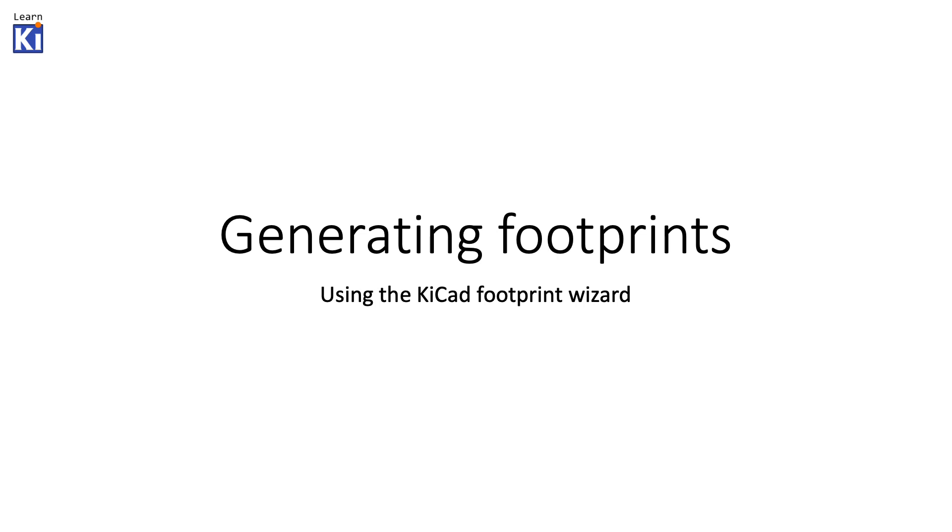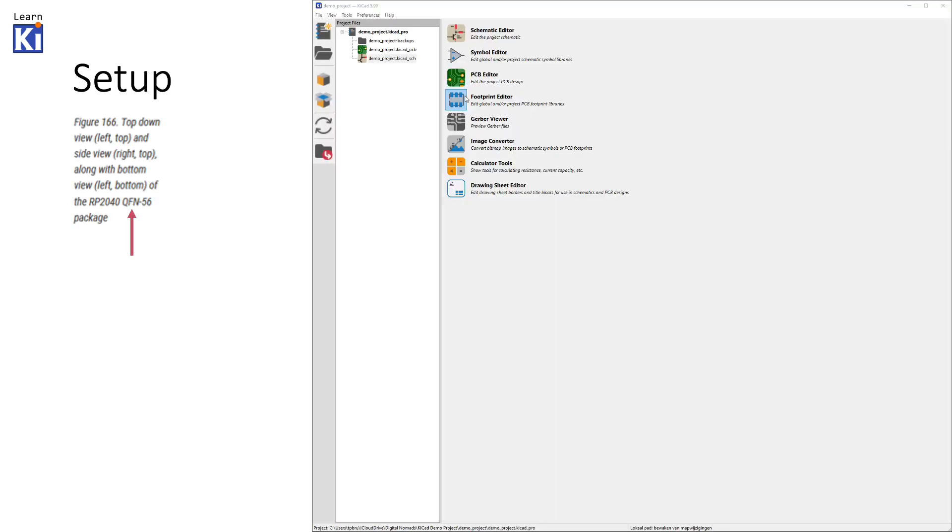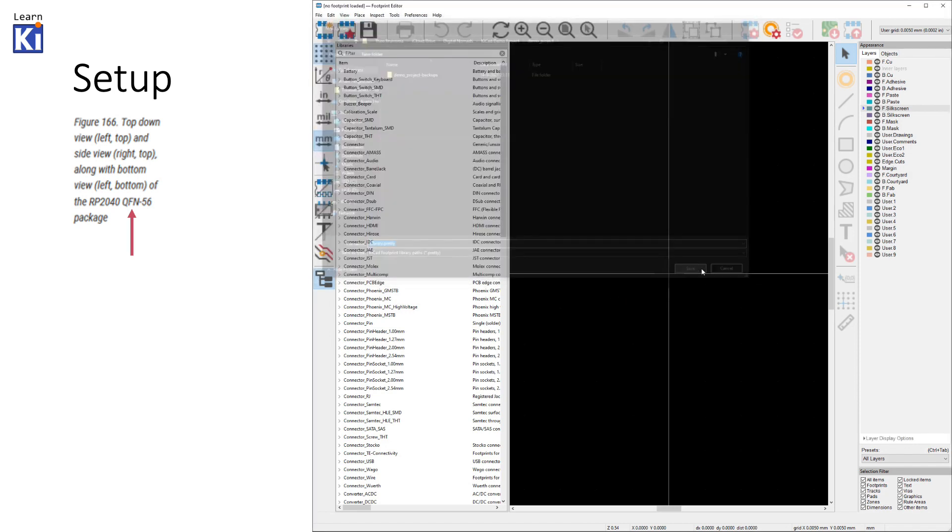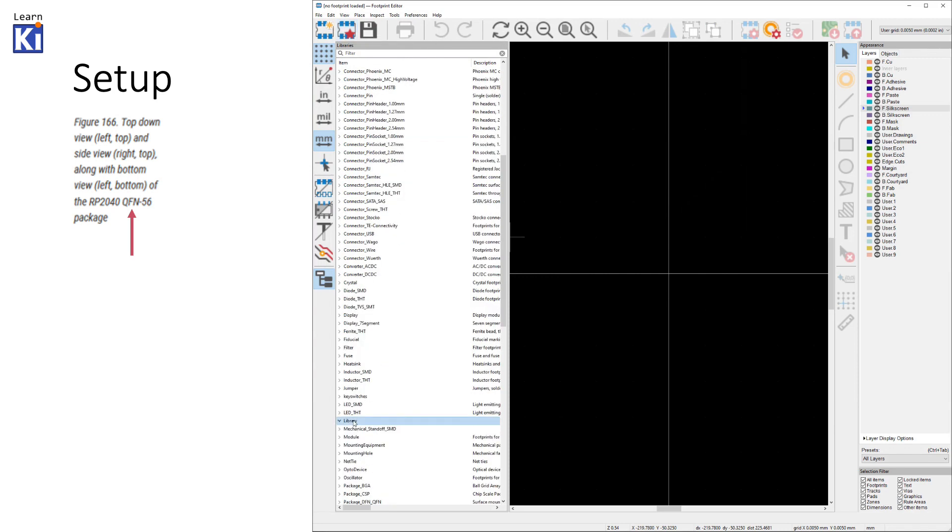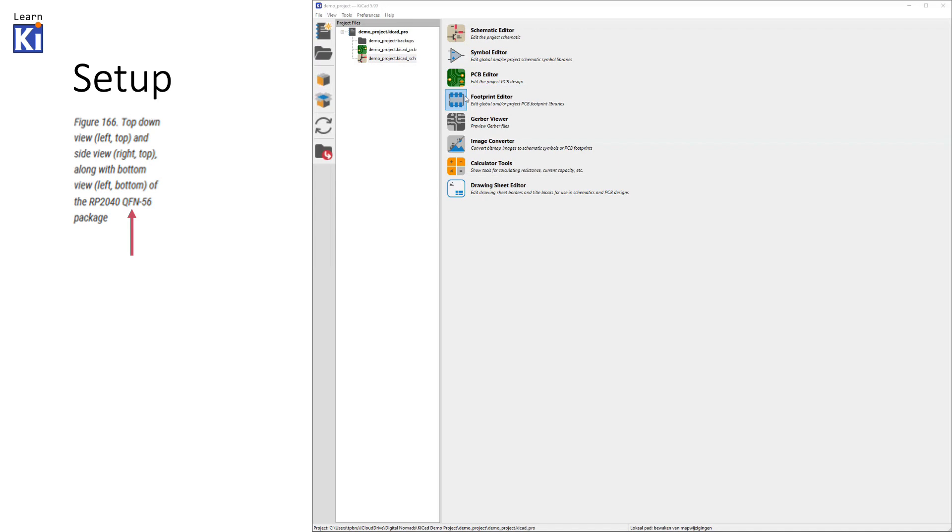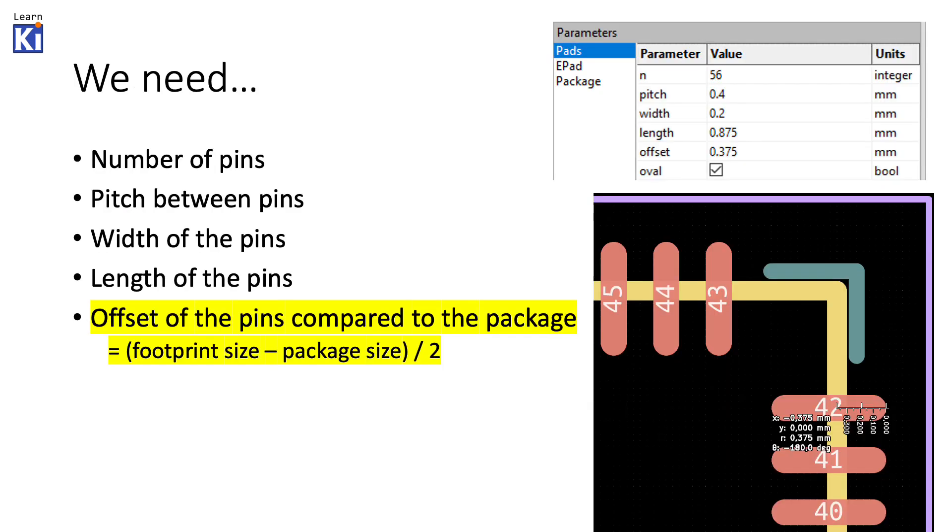So, to actually get to generating the footprints in this example. First, I will show you in this example how to get there. And I already opened a project and only make this library for this project so it doesn't interfere with the rest. And it's easy for when you have a unique chip. Then I chose the QFN, which we got from the datasheet.